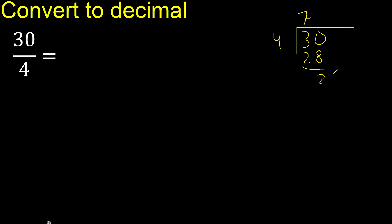There is no next number, therefore complete — always complete with 0 here, with point. 0 point, ok. 20.